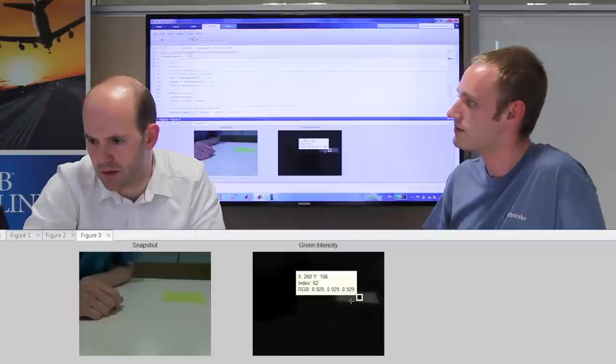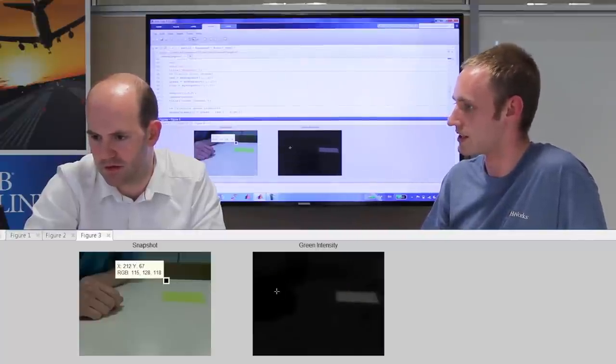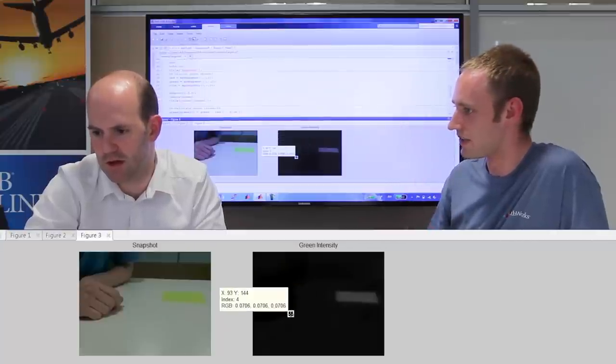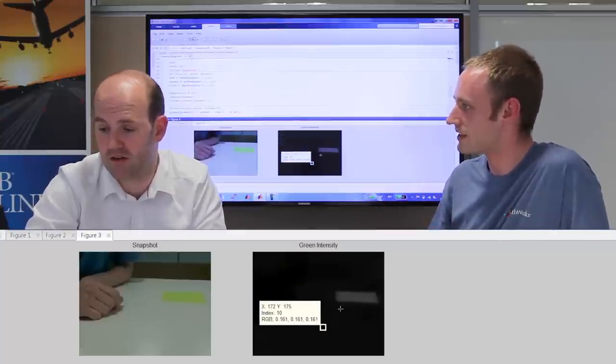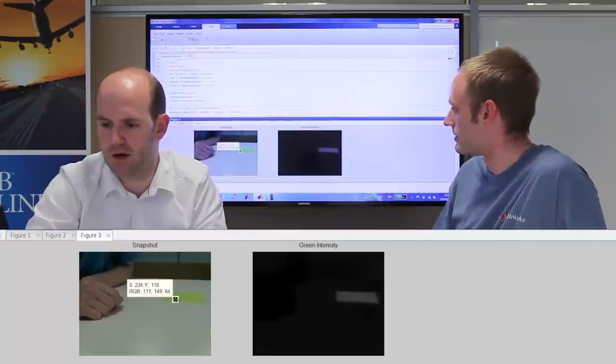So the index value is effectively how much green there is in any part of that image. So we have RGB values from the original image. Yeah. OK. Well, if you click on the... OK, these are the RGB values. Yeah. If you click on the original image, you'll get the RGB values there. There we go.